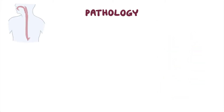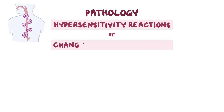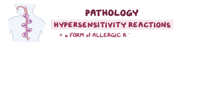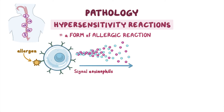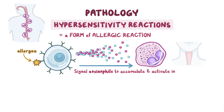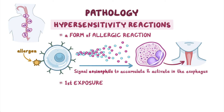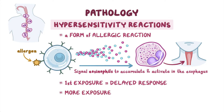The increase in eosinophils in the esophagus can be caused by a number of things, particularly hypersensitivity reactions or changes to the expression of certain genes. The hypersensitivity reactions involved are a form of allergic reaction after exposure to a food or environmental allergen. When certain cells come in contact with the allergen, they signal other cells, most commonly eosinophils, to accumulate and get activated in the esophagus. The first exposure to an allergen may take time to create a response; however, some cells remember that allergen to more quickly react to future exposures. Therefore, the more a person is exposed to allergens which trigger a hypersensitivity reaction, the more eosinophils will be present.